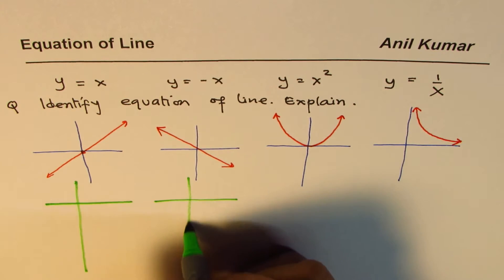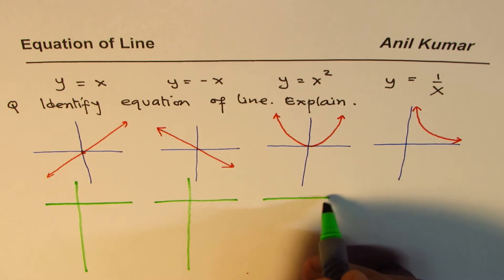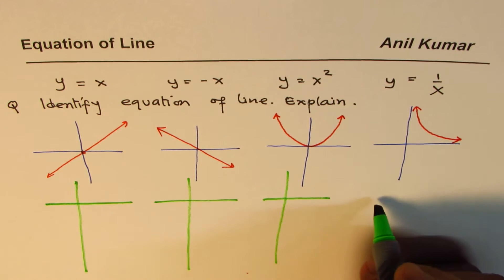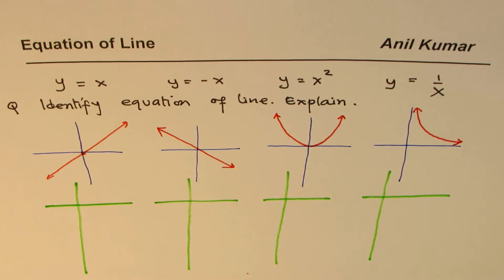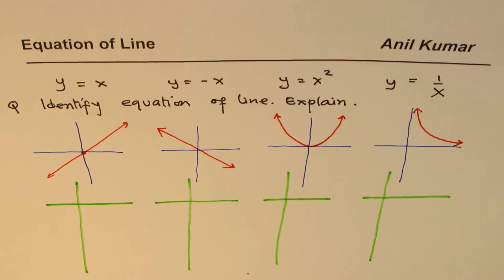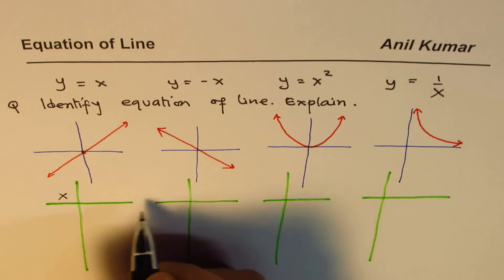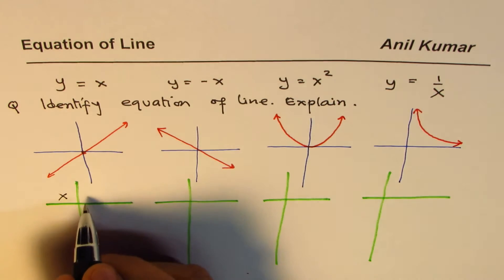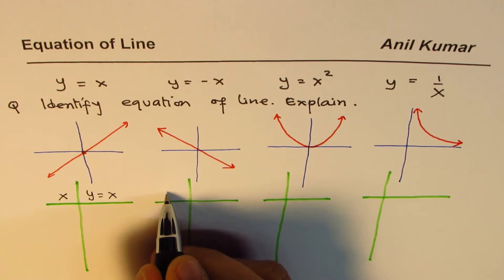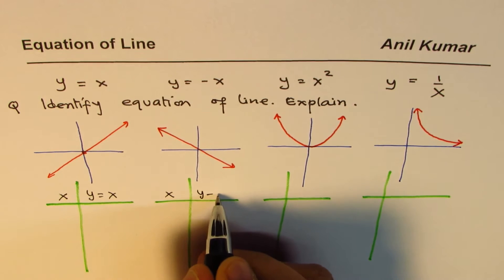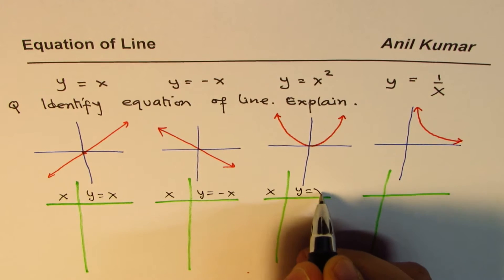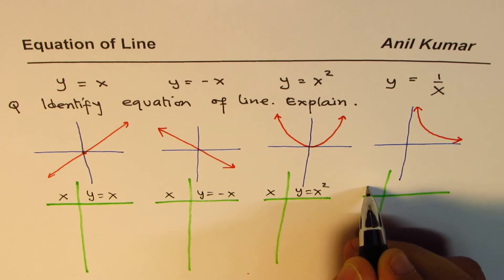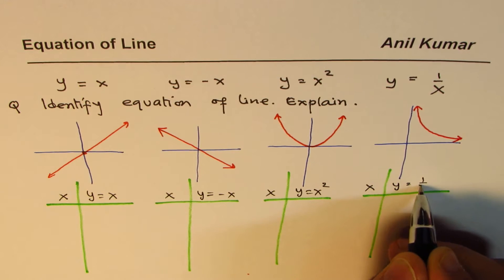So what we can do here is we can actually have a table of values. If I have a table of values for different values of X, we can calculate different values of Y. That should help us. Let's keep some values of X. In the first case, Y is exactly same. In the second case, Y is equal to negative value of X. In the third case, Y is X squared. And in the fourth case, Y equals 1 over X.